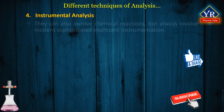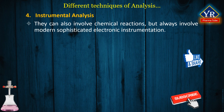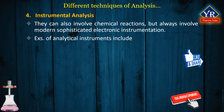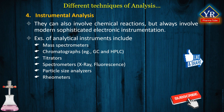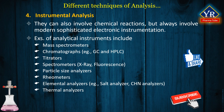Instrumental analysis can also involve chemical reactions but always involves modern sophisticated electronic instrumentation. These techniques are high-technology techniques, often utilizing complex software and hardware. Examples of analytical instruments include mass spectrometers, chromatographs such as gas chromatography and high-performance liquid chromatography, titrators, spectrometers, particle size analyzers, rheometers, elemental analyzers, thermal analyzers, and many more. These methods are fast and offer much greater scope and practicality. In addition, they are generally used to determine minor constituents or constituents present at low levels rather than the major constituents of a sample.